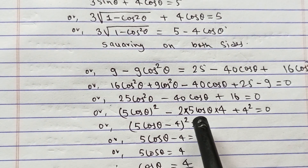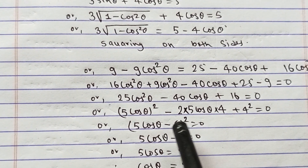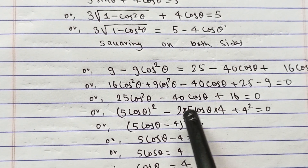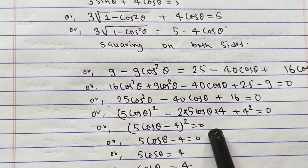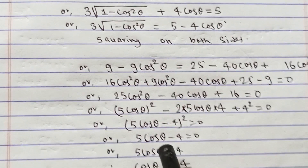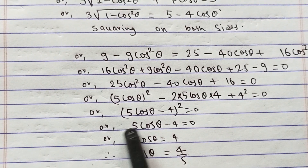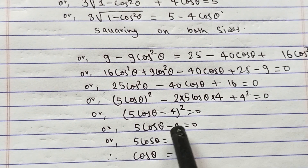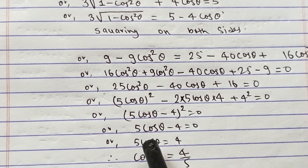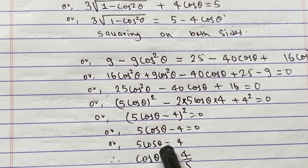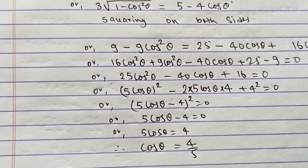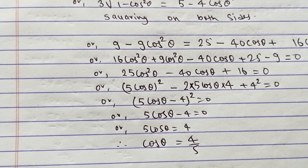So (5 cos θ - 4)² = 0. Taking the square root on both sides, 5 cos θ - 4 = 0, therefore 5 cos θ = 4, and finally cos θ = 4/5.